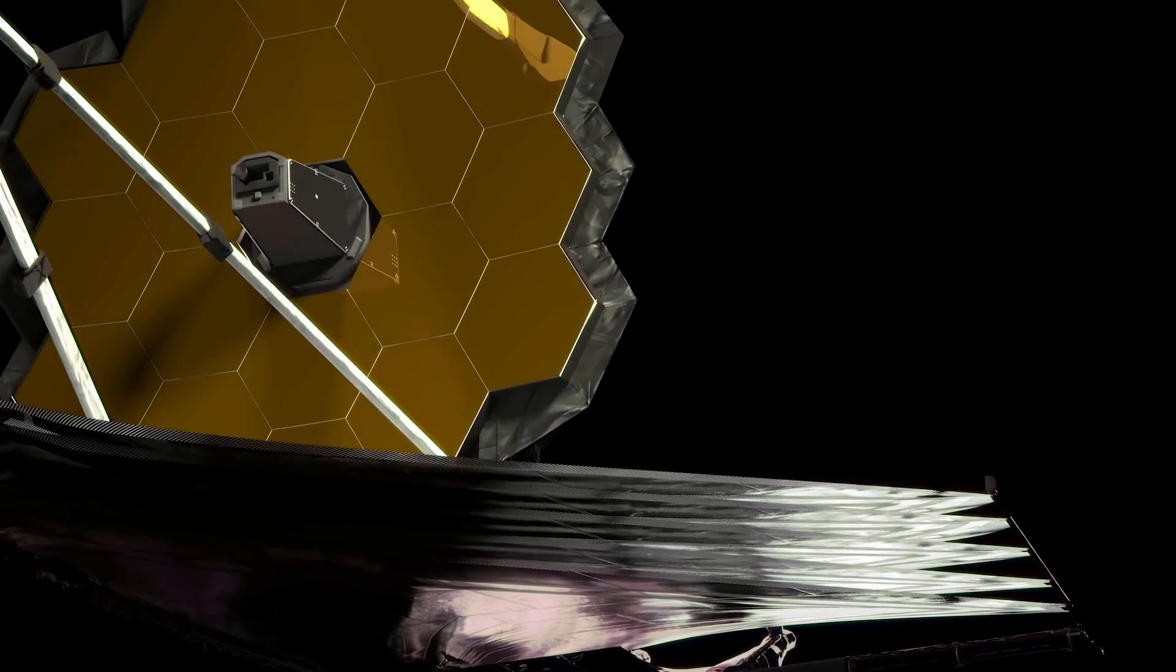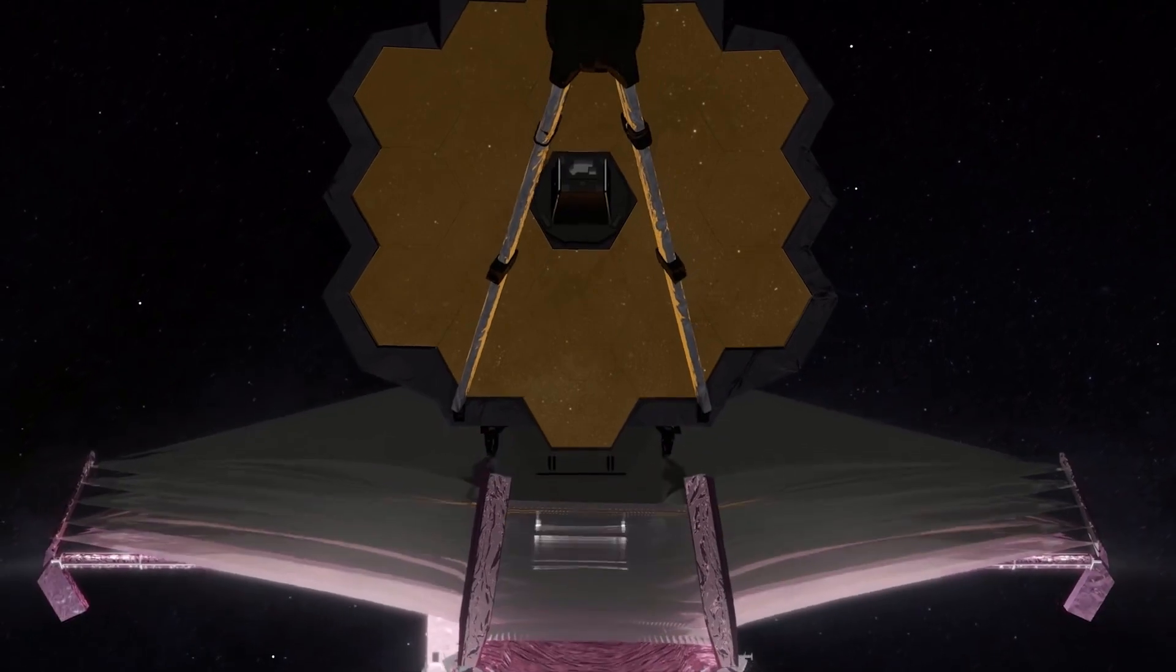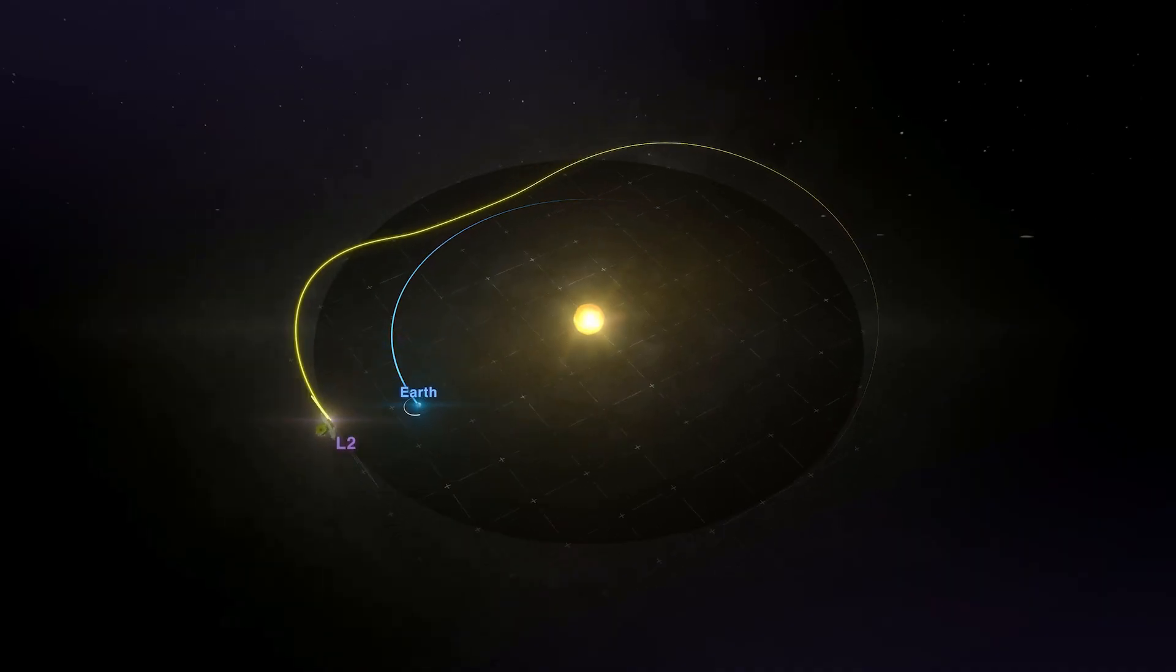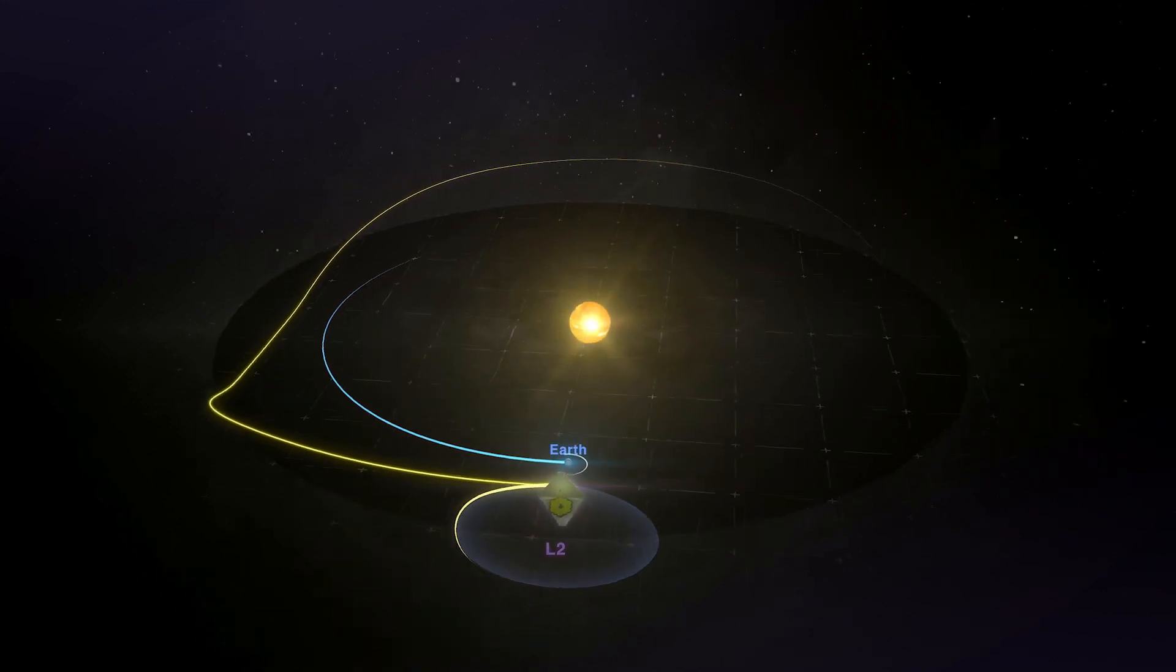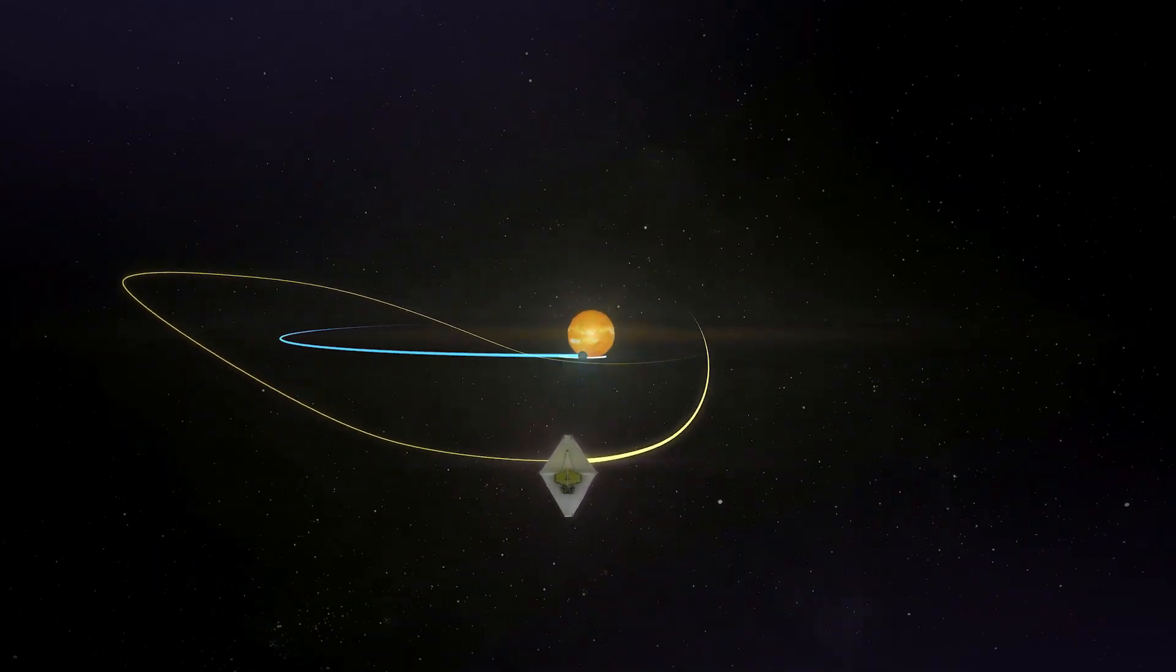The high amplification antenna starts transmitting on day 28. Now Webb has the ability to communicate with the distant Earth. On day 29, the telescope will arrive at L2 and perform a course correction burn in order to enter its final orbit around the sun.